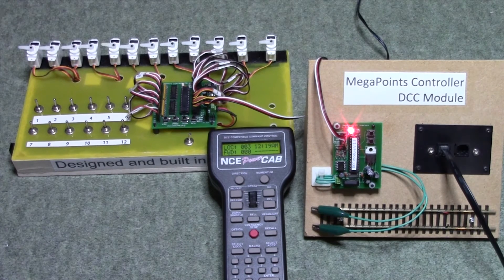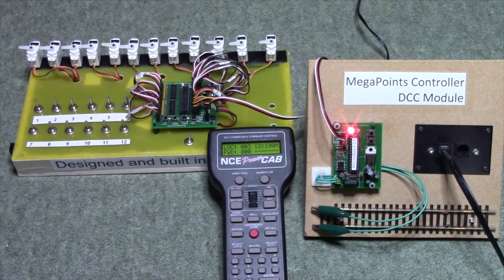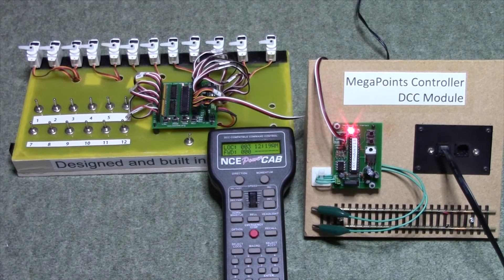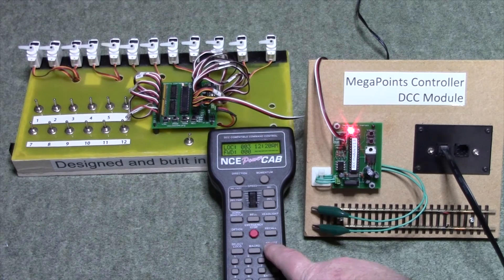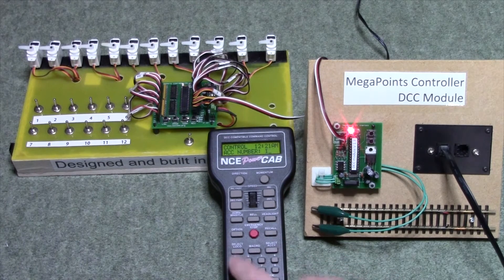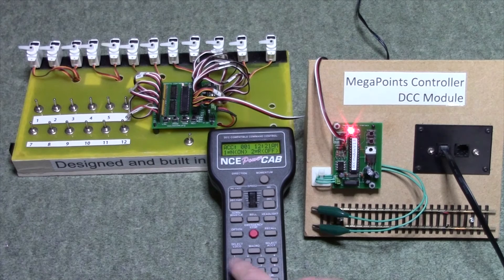Now send any DCC accessory packet and the unit will assume that as the base address. I'll now send a packet on address 1, accessory, address 1, on.